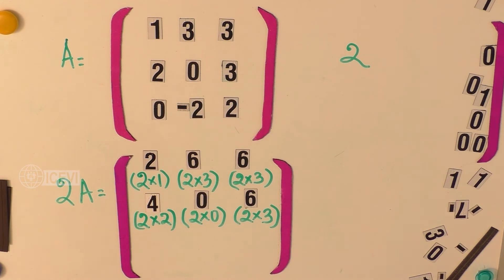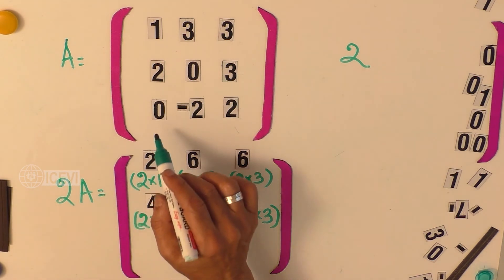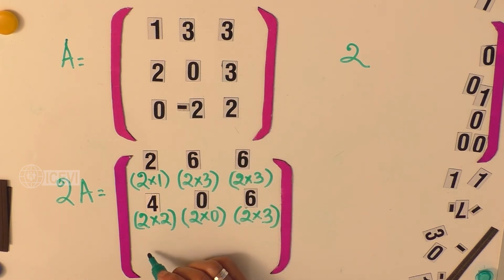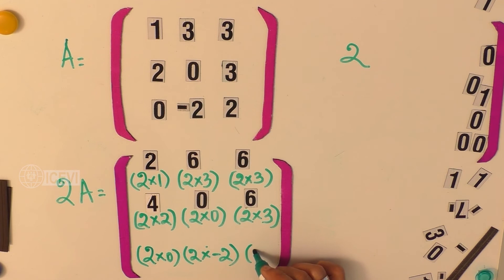Let us go to the third row. Here third row has 0, minus 2, and 2 as the elements. Again that is 2 by 0, and the next element is 2 multiplied by minus 2.